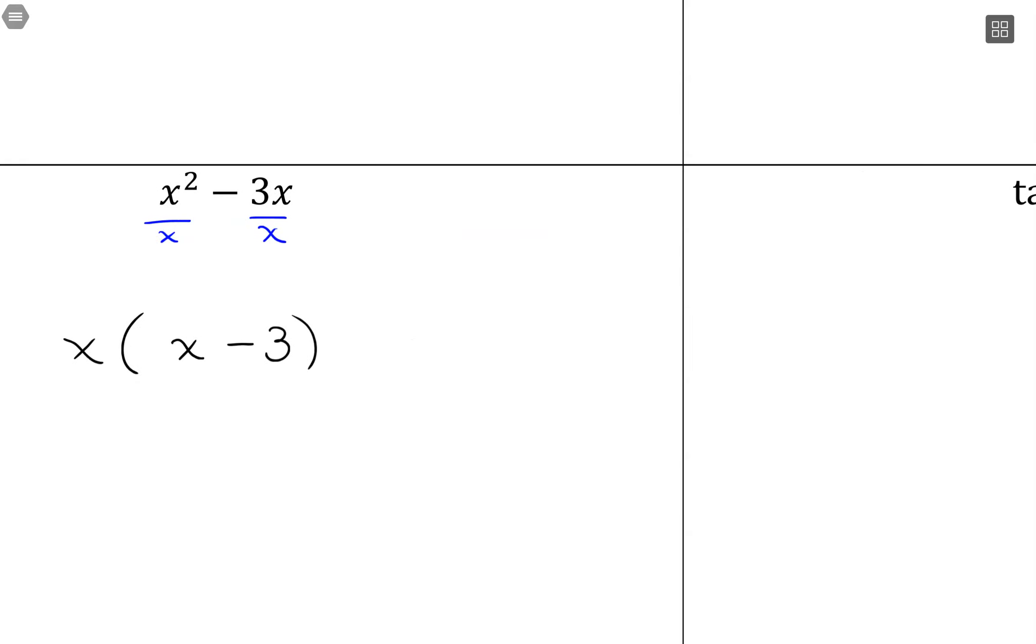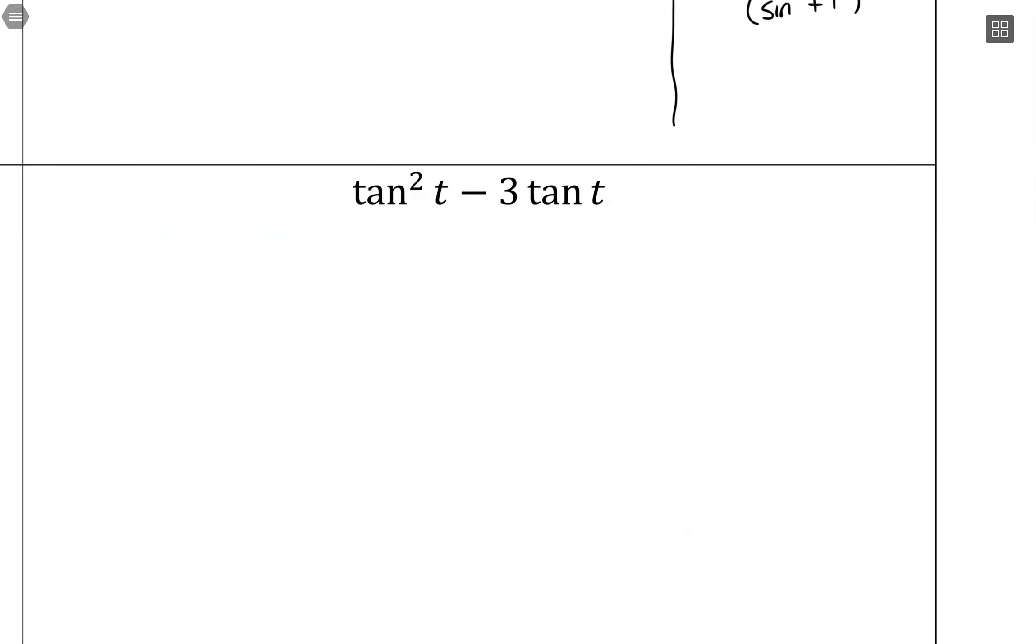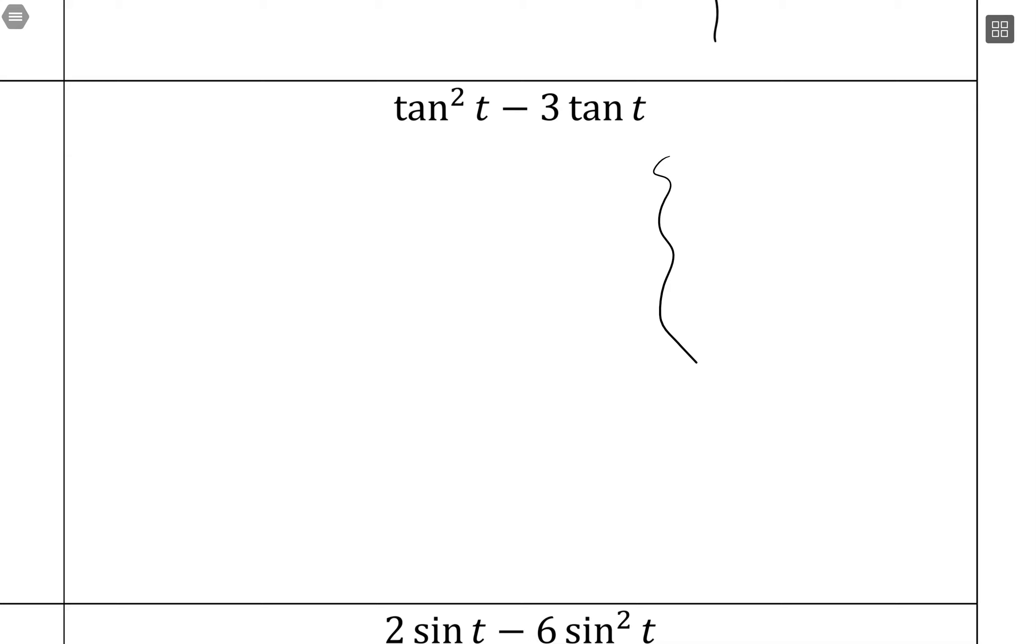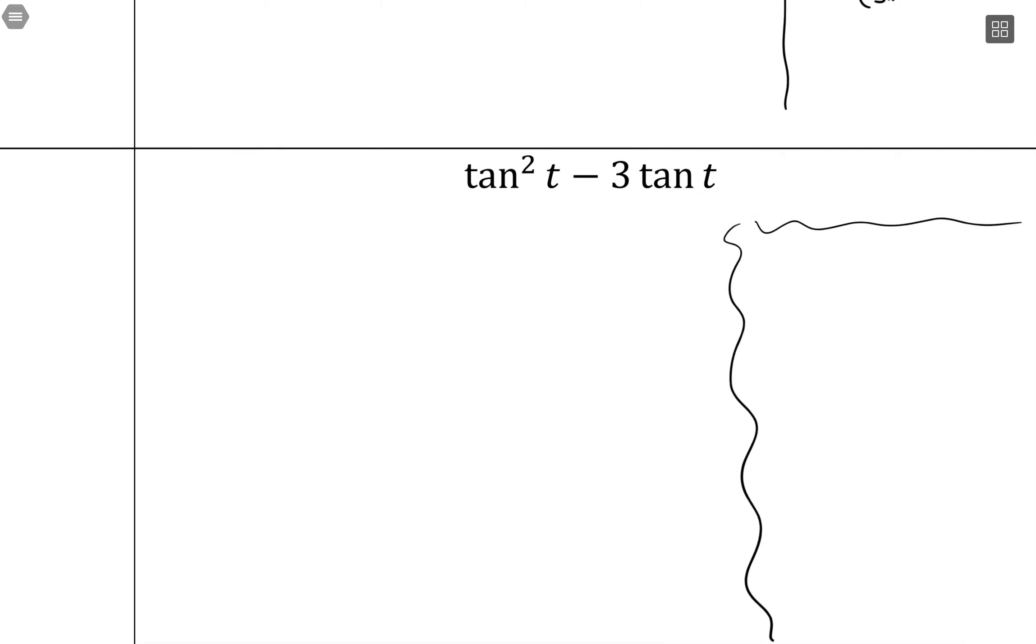So we can do the same thing with our trig functions. With this, I have something squared minus 3 times that same thing. So what I can do is factor out this tangent of t. Factor out tangent of t. It's a common factor there.